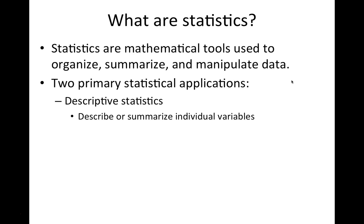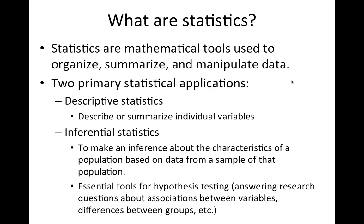We talk about two primary statistical applications. One is descriptive statistics, in which we describe or summarize individual variables. The other is inferential statistics, used to make an inference about the characteristics of a population based on data from a sample. Inferential statistics are also used most commonly to test hypotheses — answering research questions about associations between variables, differences between groups, and predictors. This is what we most often think of when we think about statistics: posing a research question, creating a hypothesis, and testing it.